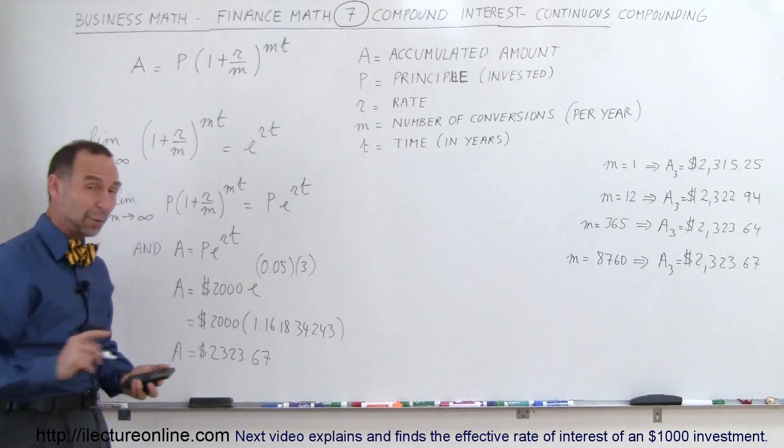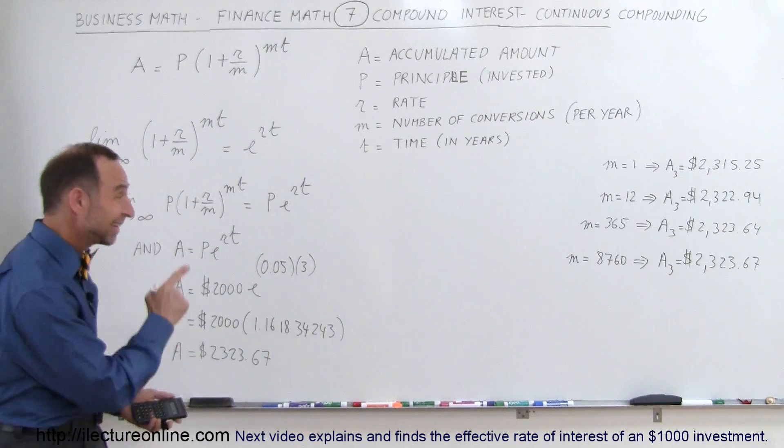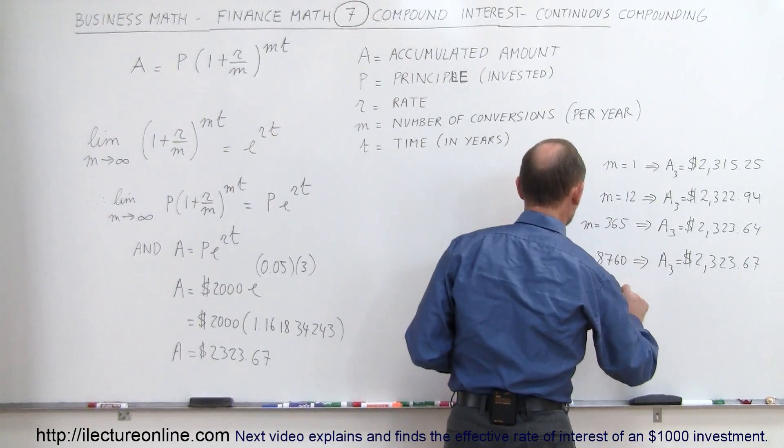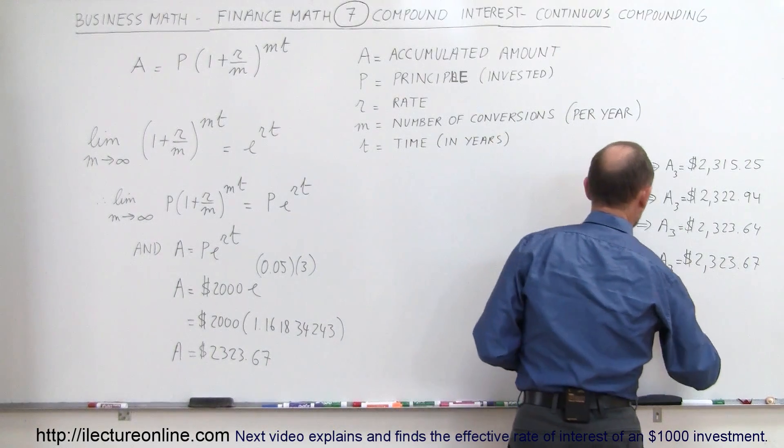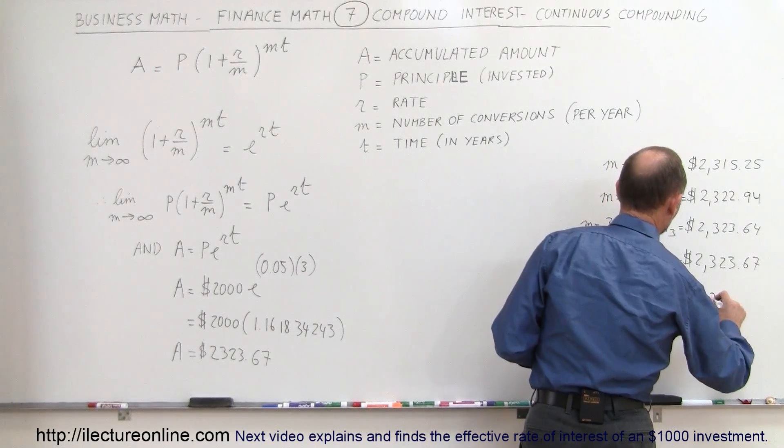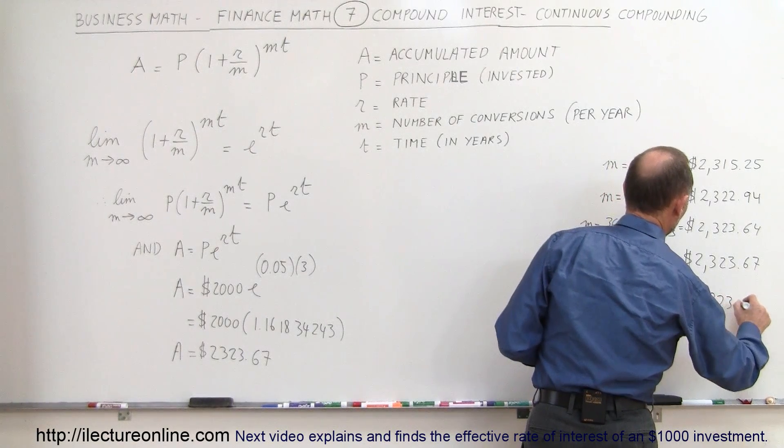Now let's go ahead and compare that to what we got before, and notice that's the exact same amount as hourly compounded. So when M becomes infinite, the accumulated amount after three years is the exact same number, $2,323.67.